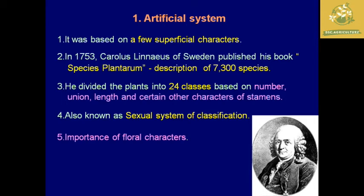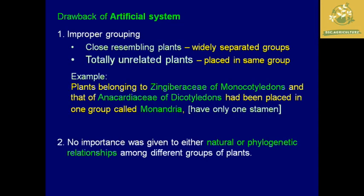The artificial system of classification was mainly based on superficial characteristics of the plant. For example, a scientist named Carolus Linnaeus published a book in 1753 named 'Species Plantarum', where he described about 7,300 species of plants. He classified each and every plant based on the number, union, length, and certain characteristics of stamens into 24 classes. His system was mainly called the sexual system of classification, giving importance to floral characters.